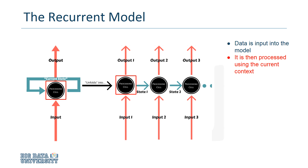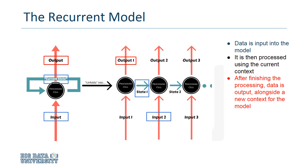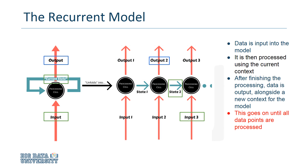If this is the first data point, then some form of initial state is used, which will differ depending on the type of data being analyzed. After processing, the data is output with a new context that represents the most recent point. Then this context is fed back into the net with the next data point, and so on.